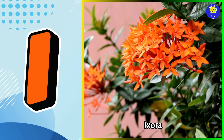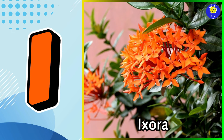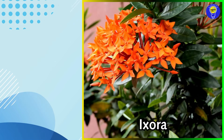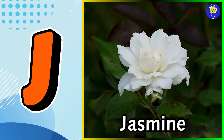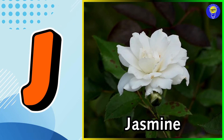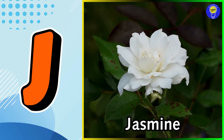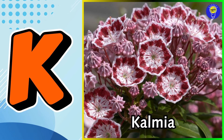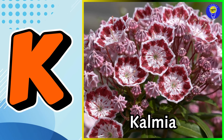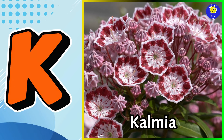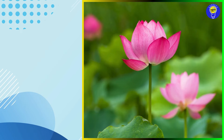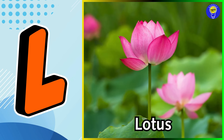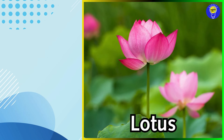I is for ixora flower. J is for jasmine flower. K is for kalmia flower. L is for lotus flower.